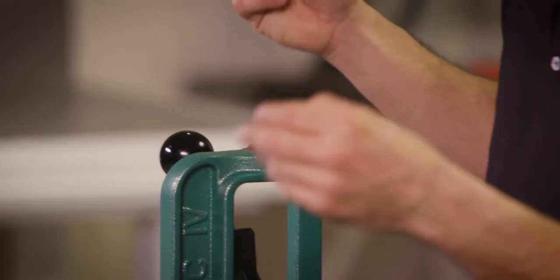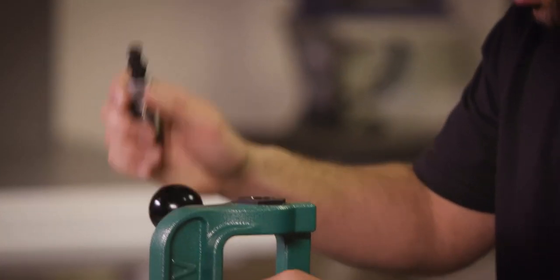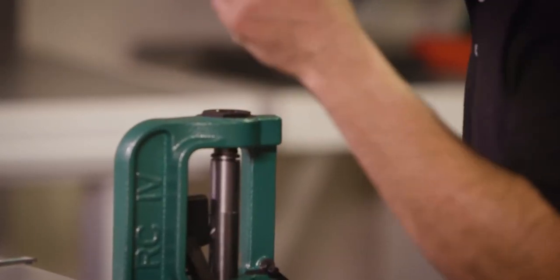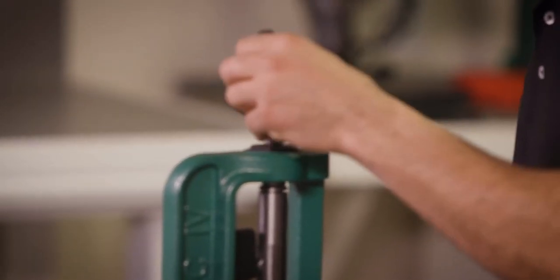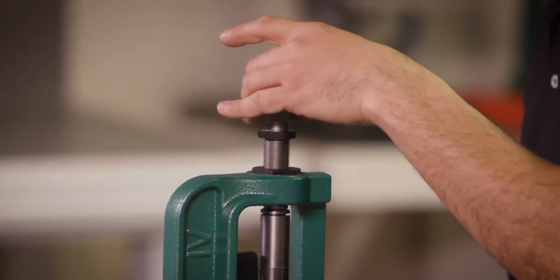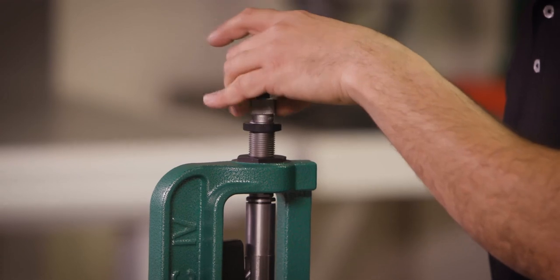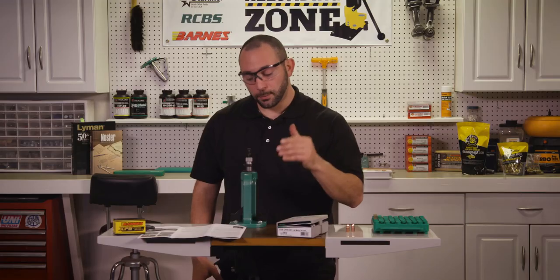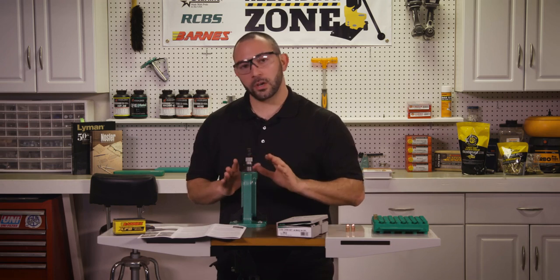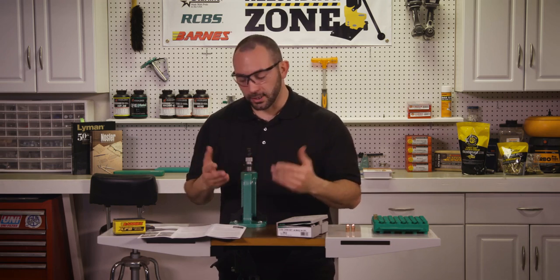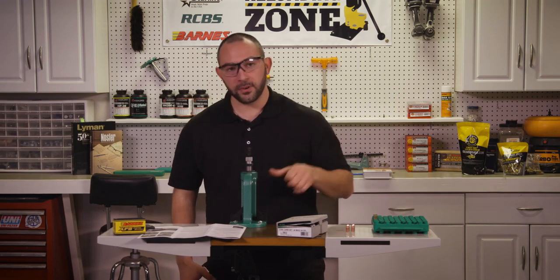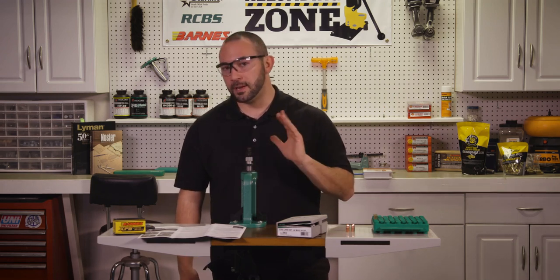We're going to get our seating die out. And this gets set up with the case in place, just like our rifle die did. I'm going to run that case all the way up. And again, screw the die in until we meet resistance. So at this point, the case has now entered the crimping area of the die. We don't want to crimp just yet because we need to set up our overall length. So we're going to back it out just a turn as we did before. But before we finish, we're going to put that turn back on and maybe even a little more.